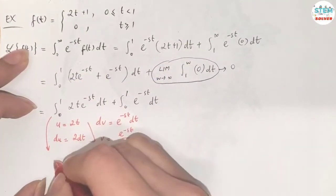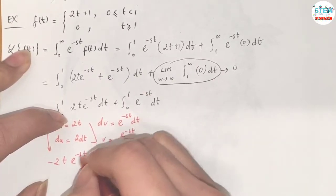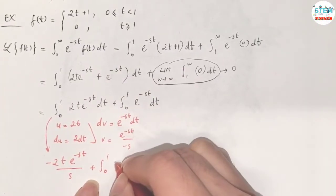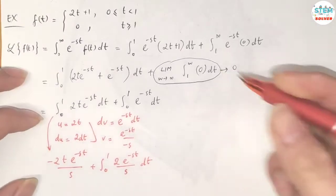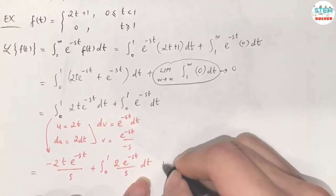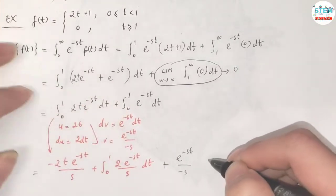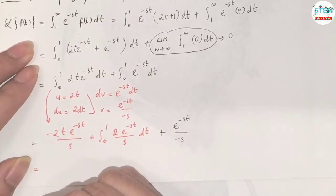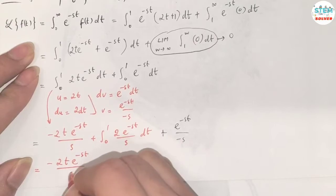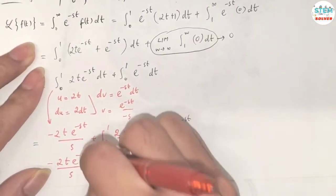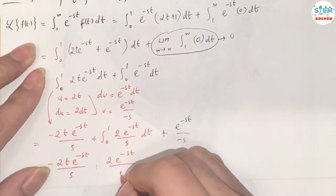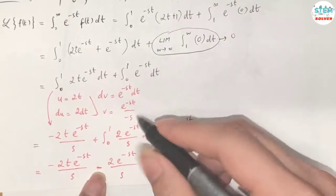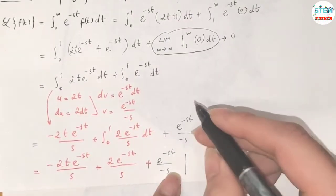Applying integration by parts, this becomes negative 2t e to the negative st over s, evaluated from 0 to 1, minus the integral from 0 to 1 of 2e to the negative st over s dt. The integral of e to the negative st is e to the negative st over negative s. So we have negative 2t e to the negative st over s, minus 2e to the negative st over s squared, plus e to the negative st over negative s, evaluated from 0 to 1.